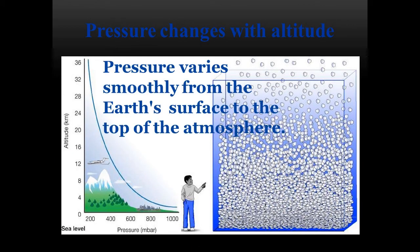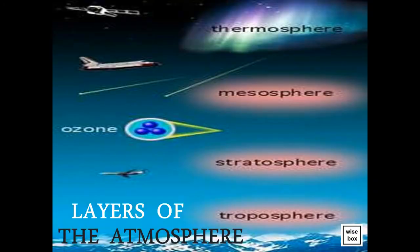Pressure varies smoothly from the Earth's surface to the top of the atmosphere. It decreases as you go higher up in the atmosphere.